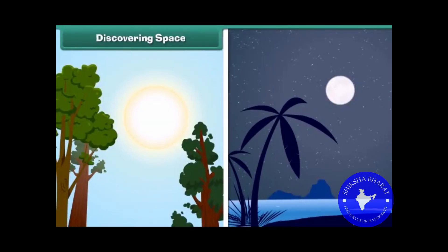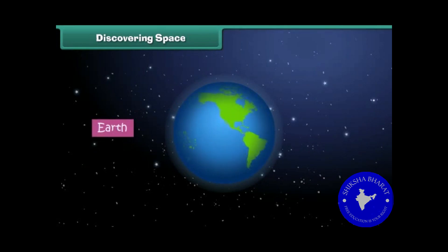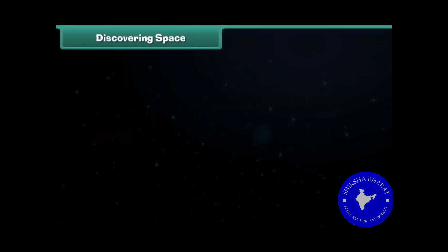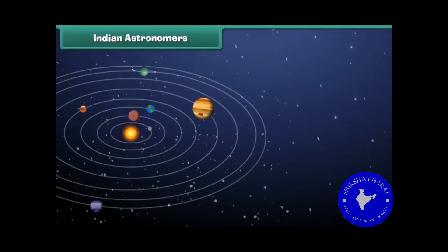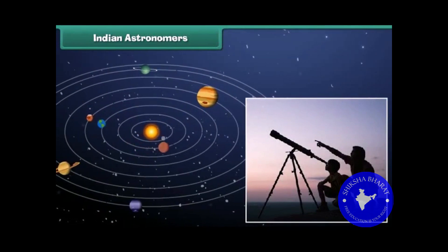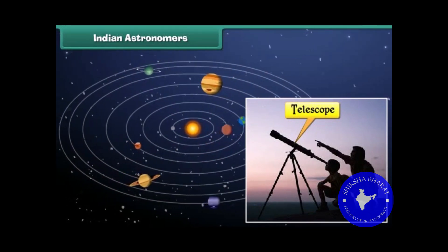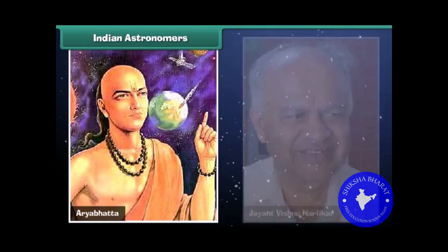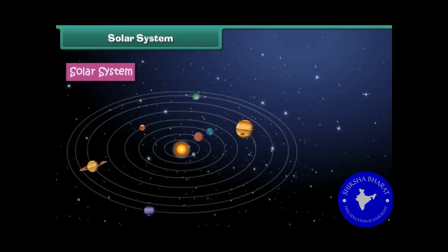The Sun, Moon and the stars that we see in the sky are all located in space. The Earth on which we live is also in space. Everything from the small dust particle to the large planet is placed in space. An astronomer is a person who studies stars and planets and uses a telescope for study. Bhaskaracharya and Jayant Vishnu Narlikar are some well-known Indian astronomers.